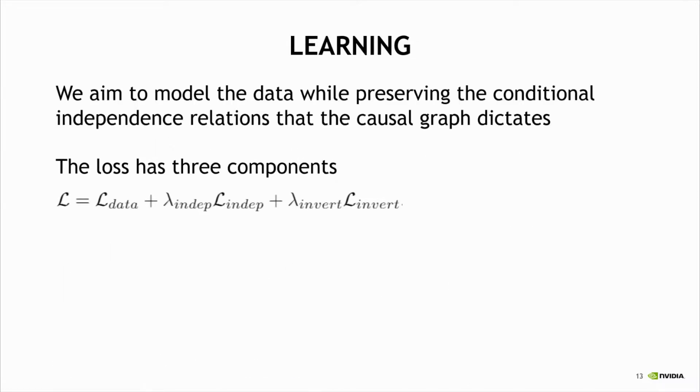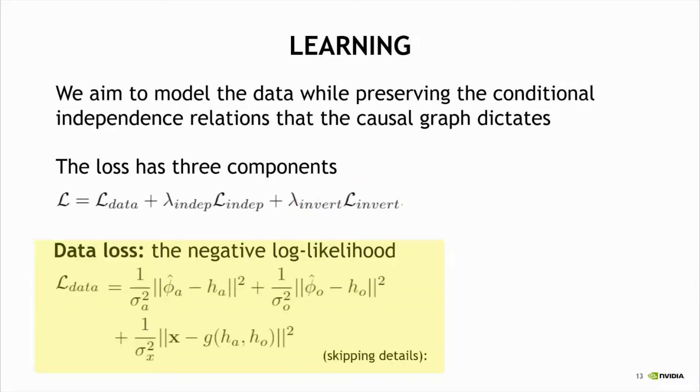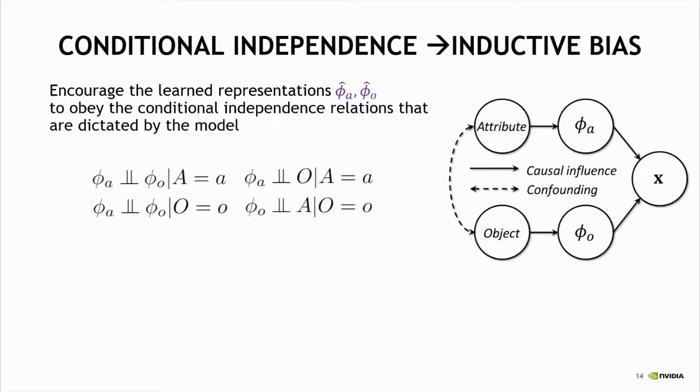Our loss has three components. One is how well the model matches the data. Second is how well it preserves the conditional independence relations that the causal graph dictates. And third is just technical, making sure to avoid null solutions. The first term, the data loss, is the negative log likelihood that was shown in the previous slide. The second term encourages the learned latent representation of the attribute and object to obey the conditional independence relations that are dictated by the structural causal model.